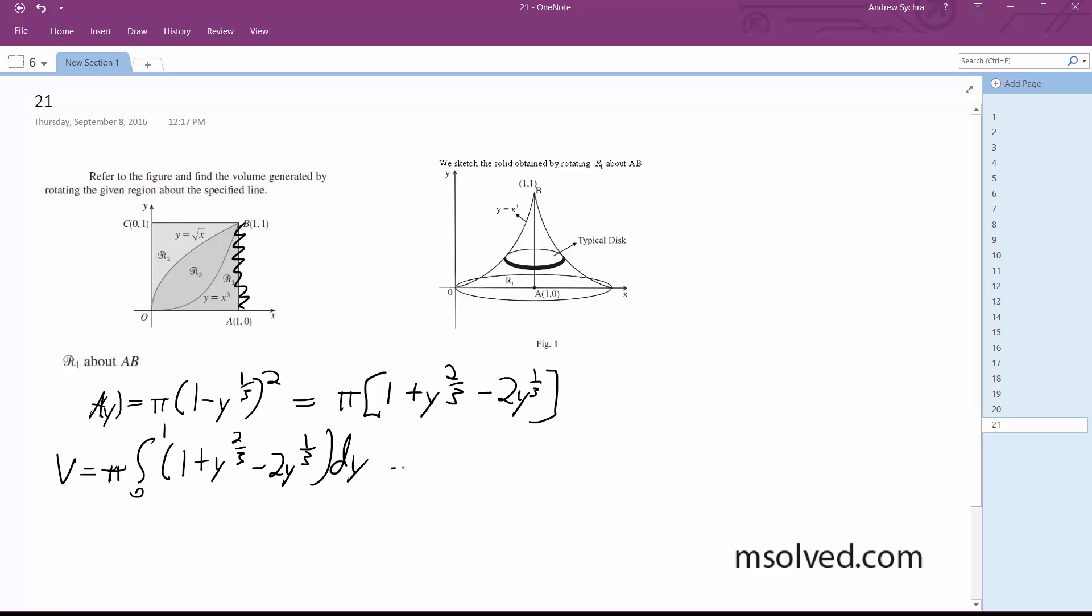After it's integrated, π(y + 3/5·y^(5/3) - 6/4·y^(4/3)) from zero to one.